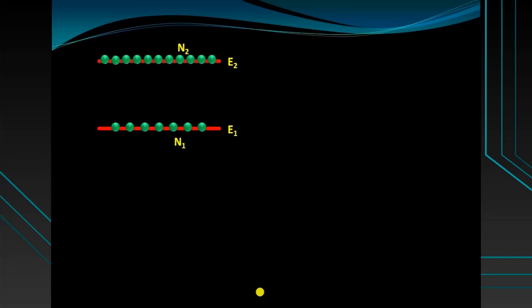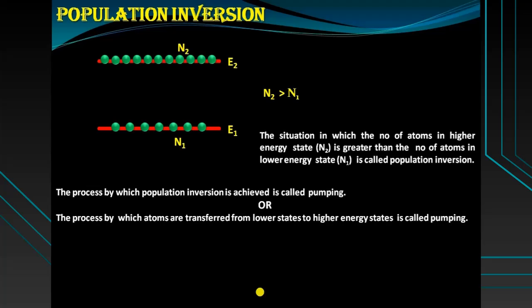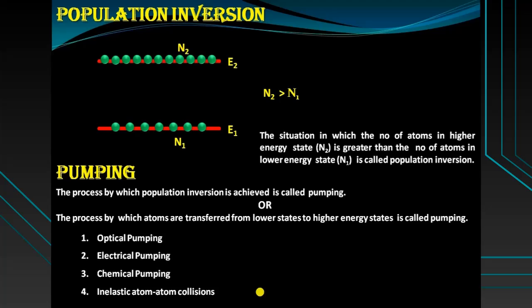The situation in which the number of atoms in the higher energy state or excited state becomes greater than the number of atoms in the lower energy state or ground state is called population inversion. The process by which population inversion is achieved is called pumping, or we can say the process by which atoms are transferred from the lower state to the higher energy state is called pumping.